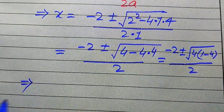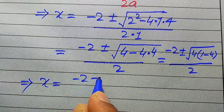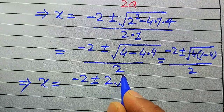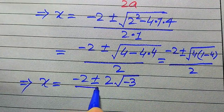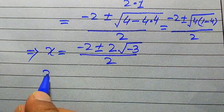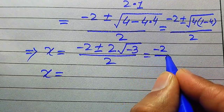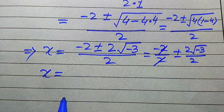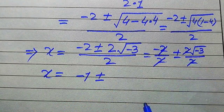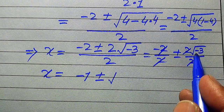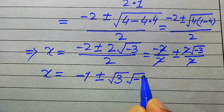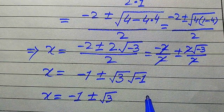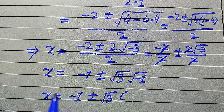We apply the square root separately: square root of 4 equals 2, and square root of minus 3 remains. Breaking the fraction, we get minus 2 over 2 plus or minus 2 times square root of minus 3, divided by 2. The 2s cancel, giving minus 1 plus or minus square root of minus 3. Writing square root of minus 3 as square root of 3 times square root of minus 1, and knowing that square root of minus 1 equals i (iota), we obtain x equals minus 1 plus or minus i√3.